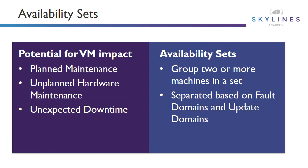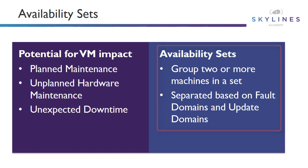The way to solve this is using availability sets. This allows us to group two or more machines into a set, and they're basically separated out based on two things: fault domains and update domains.